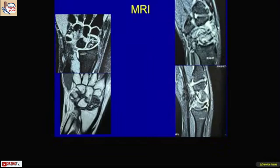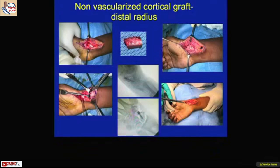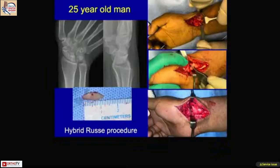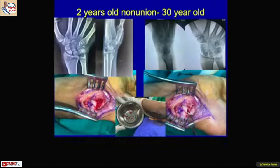We had a patient with scaphoid non-union of nine months. These are the MRIs. We harvested a chunk of non-vascularized cortical graft from the distal radius, placed it between the scaphoid non-union site, and fixed it to achieve a good functional outcome. Similarly, in a 25-year-old man, a strut graft from the distal radius was interposed at the non-union site with good follow-up results.